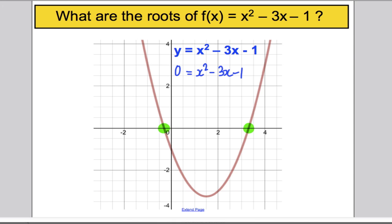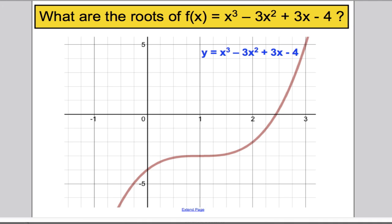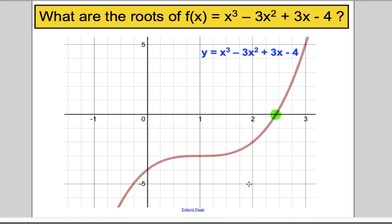Here's another example to think about what roots are. With a new function, the root is approximately nearly 2.5. The root is the x value that makes the function have a y value equal to 0, i.e. the solution to f(x) = 0 — that is, the solution to 0 = x³ - 3x² + 3x - 4.